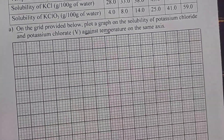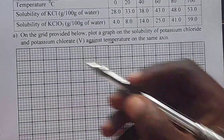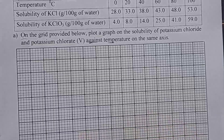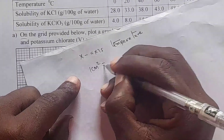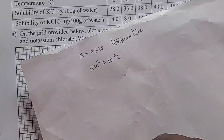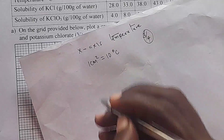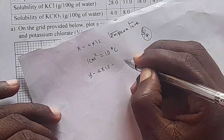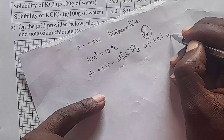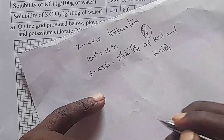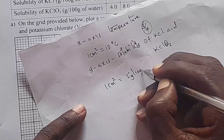In my Cartesian plane, there are 15 square boxes on the x-axis and 15 square boxes on the y-axis. The appropriate scale for the x-axis is 1 cm² to represent 10 degrees Celsius. Remember, learners, your curves have to cover three-quarters of the graph paper. On the y-axis, for the solubility of potassium chloride and potassium chloride 5, 1 cm² will represent 5 grams per 100 grams of water.